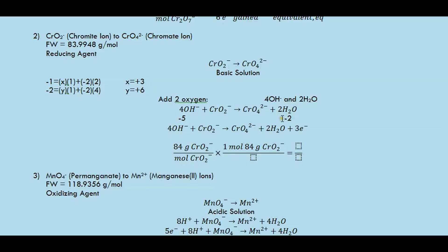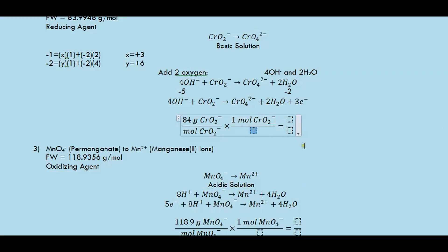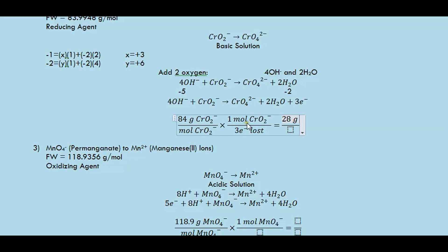We need to add 3 electrons to the right side in order to balance the charge. So there is a loss of 3 electrons in this half reaction. That means the equivalent weight is 84 divided by 3, giving 28 grams per equivalent.